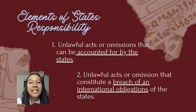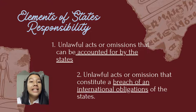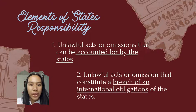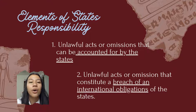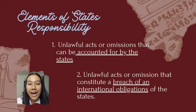The second element is unlawful acts or omissions that constitute a breach of an international obligation of the state. International obligations — or legally binding decisions — include treaties, conventions, and charters that regulate provisions concerning matters already discussed and agreed upon by states. It can also be an international customary law that all states must abide by.